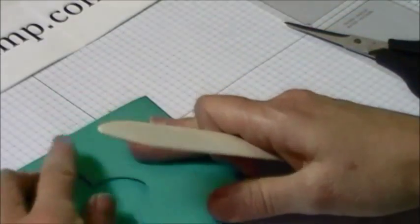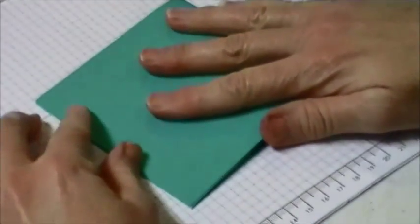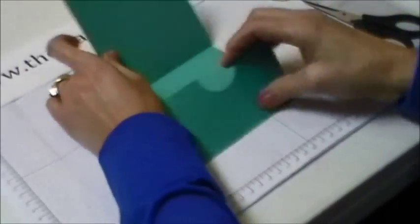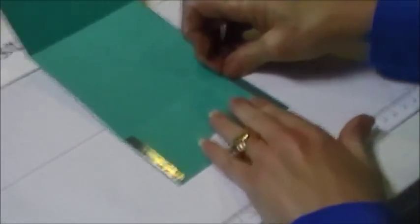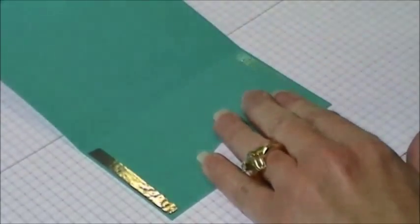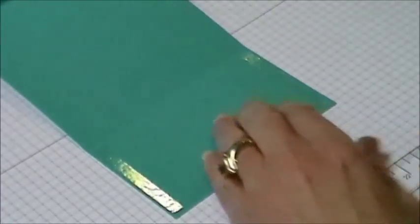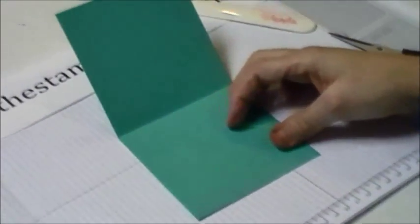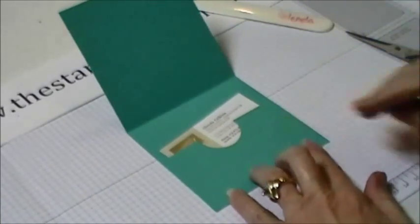Then you're going to take your bone folder and crease that score line there, and then fold it and crease that score line there. Now just take that red line tape off there. Fold it back down. Now you've created your pocket for your gift card holder so that fits in there like that.